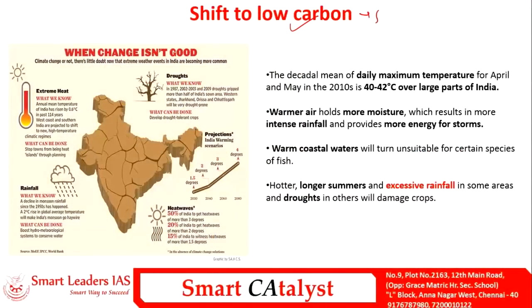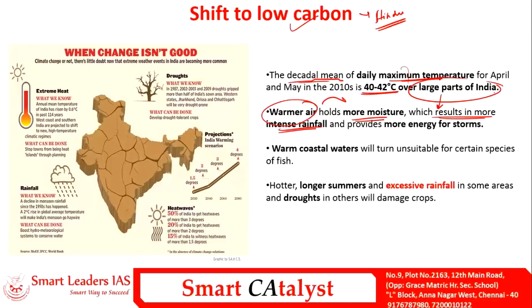The next article on shifting to low carbon, written in The Hindu, notes that a report study shows the decadal mean maximum temperature has crossed 40 to 42 degrees Celsius over large parts of India, which will have major ramifications for agriculture and allied activities. Because of the increase in maximum temperature, it heats the air, increasing moisture-holding capacity, resulting in more intense rainfall in certain parts prone to flooding. It also provides more energy for storms, leading to many cyclones over coastal regions.